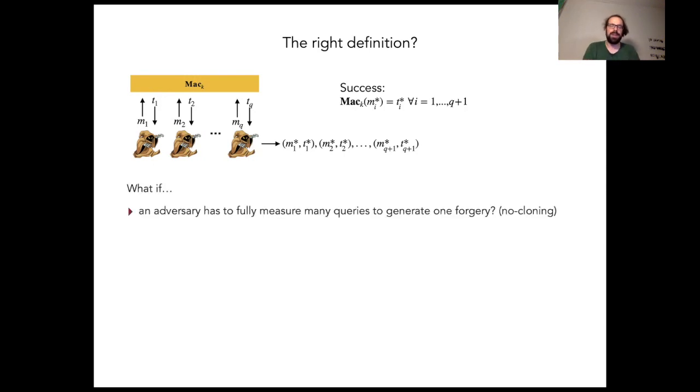Here are the problems. First of all, say an adversary can make a genuine forgery for a MAC, but to do that the adversary has to make a number of queries and then completely measure the whole state and thereby destroy it. Then they can maybe output the final forgery, but not a number of queries many other valid message tag pairs.